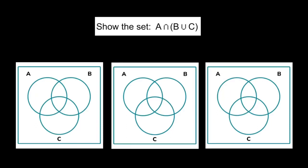Hello, and welcome to Nikolai's Biostatistics lessons. And today we are going to talk about Venn diagrams, and we are going to solve this problem. So we have to show the following set: A intersection with B union C.